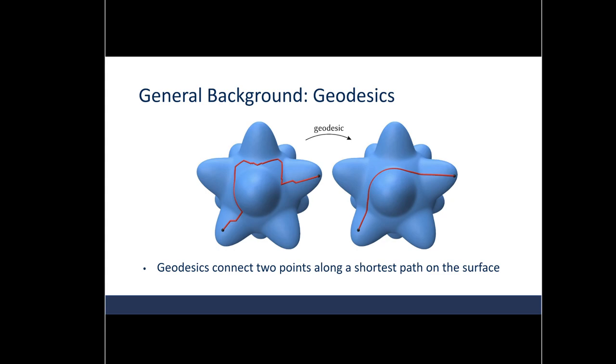So first let's cover some background and explain what geodesics are. Take two points on this surface. Many different paths could connect the two points. The geodesic path is the shortest path of all those paths. So if you want to go somewhere quickly, take the geodesic path.